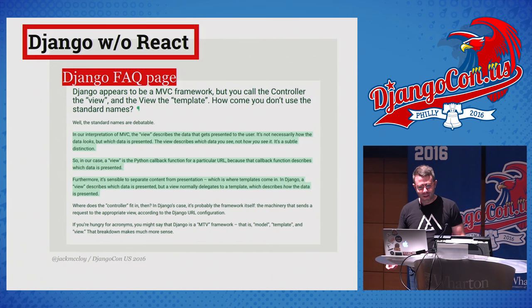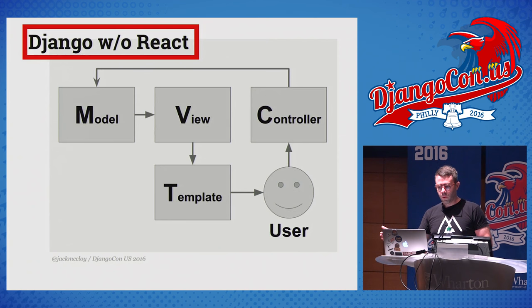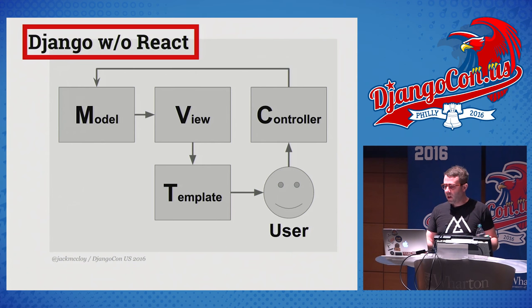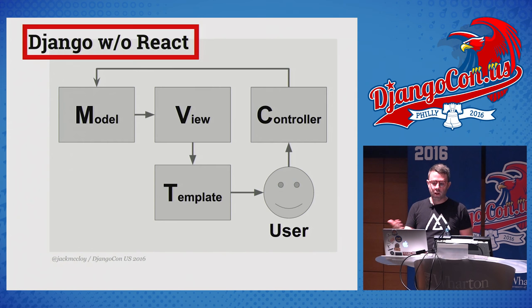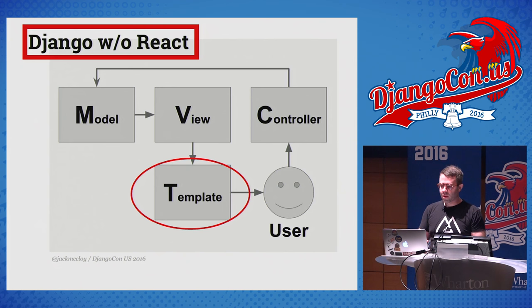What Django is saying is that in Django, the view part of MVC is split into two things: the view in views.py that renders data to your templates, and the templates themselves — which are the actual view the user sees. So the MVC map in Django looks like: the model corresponds to models.py, views corresponds to views.py, they render data to your templates which the user sees, the user interacts with templates to manipulate the controller — kind of like the framework itself — and the controller updates the model. React fits here. React fits where the templates are. It replaces your Django templates.